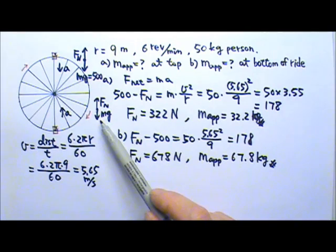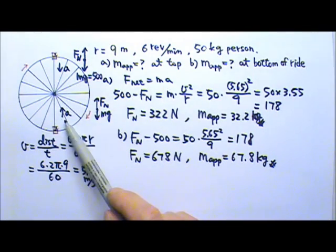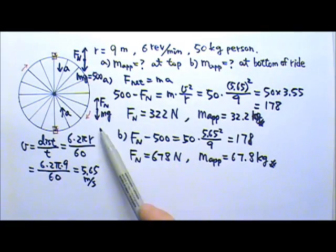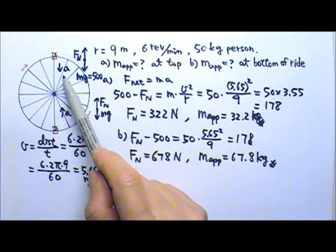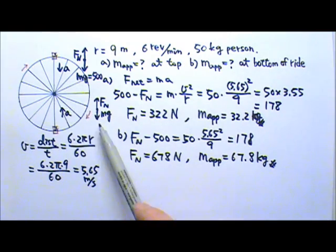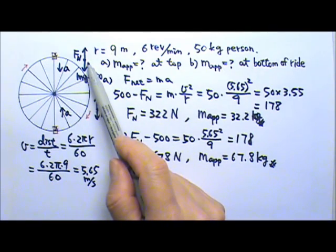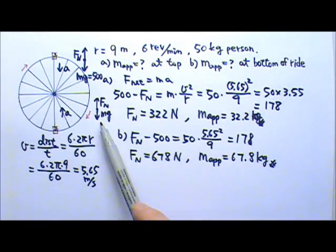Again, this one, just like the Tarzan problem, it's also like the elevator problem. For the elevator problem, you would have the same force diagram. This will be like the elevator having a downward acceleration. This will be like the elevator having an upward acceleration. And you would feel lighter if there is a downward acceleration. You would feel heavier if there is an upward acceleration.